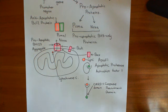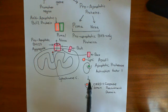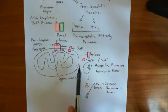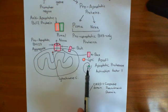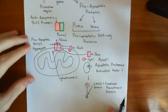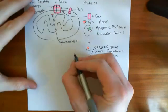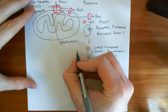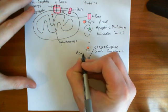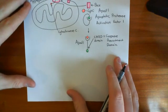Cytochrome C will then bind to the apoptotic protease activation factor 1, or APAF1, and cause this caspase recruitment domain to be released from that binding site, because cytochrome C will displace it. These APAF1 proteins, now with their exposed caspase recruitment domains, can aggregate together to form a structure known as the apoptosome.